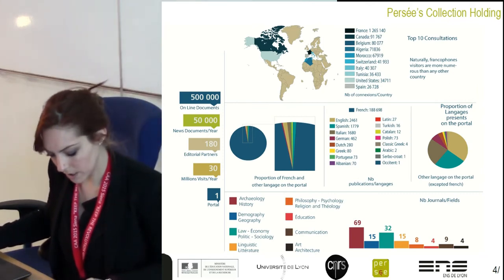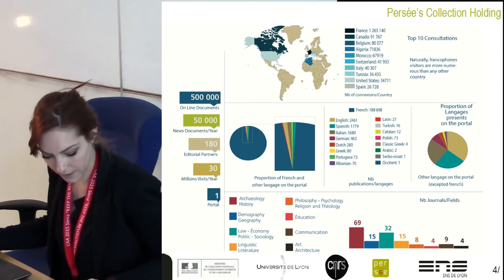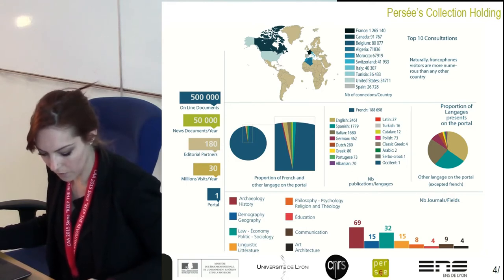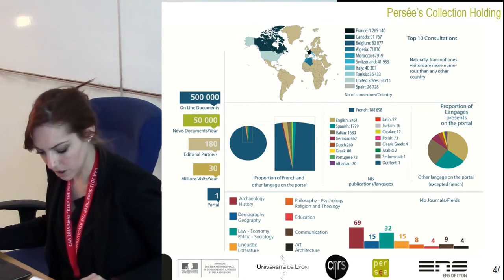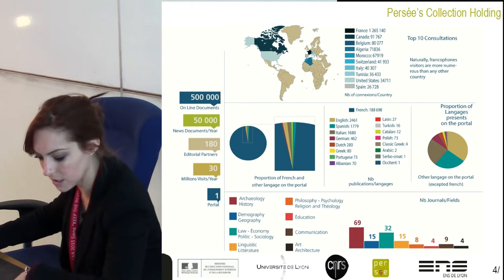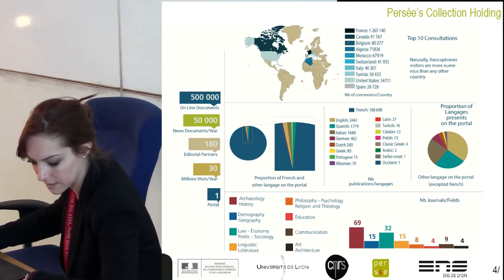The first is language: our collection is mainly composed of Francophone journals. The second is the field: thanks to the foundation of our programme, our speciality was the field of humanities and social science. In the beginning of 2015, we completed our collection with hard sciences such as biology, geology and physics. The last particularity is the selection of journals we disseminate.